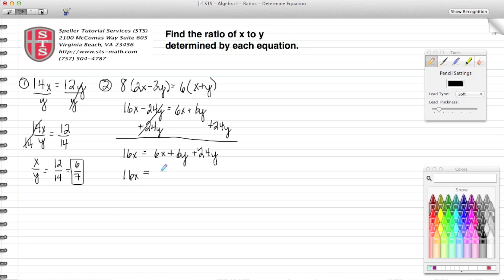Rewrite: 16x equals 6x—I can combine like terms, so 6y plus 24y gives me 30y. Now I want to get this 6x to the other side, so I'm going to subtract 6x from both sides.